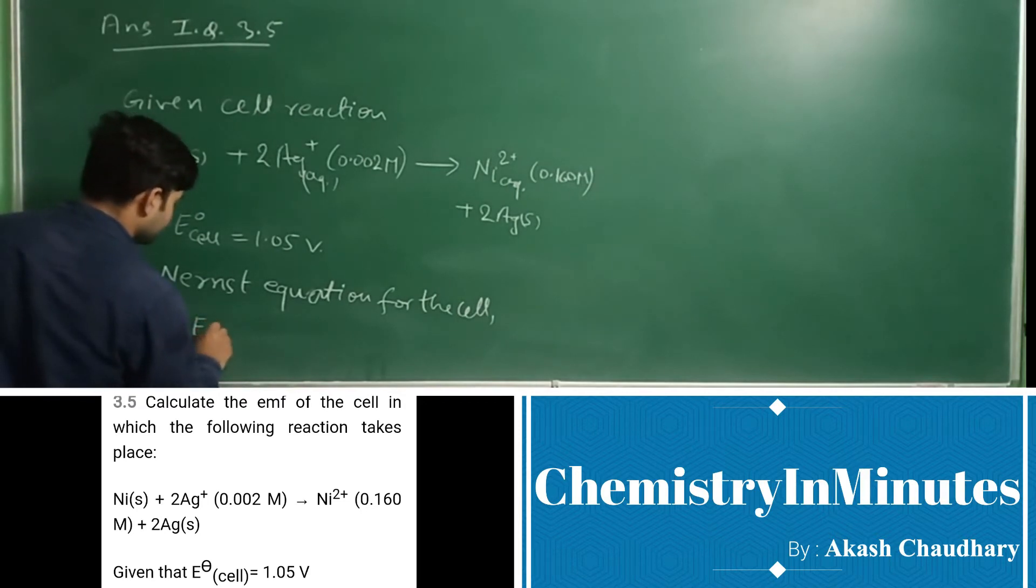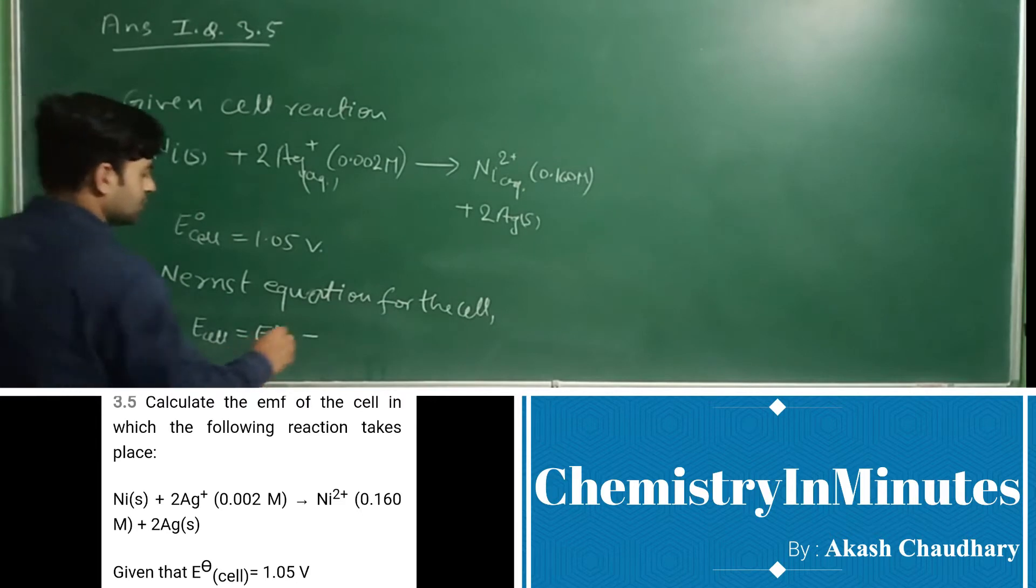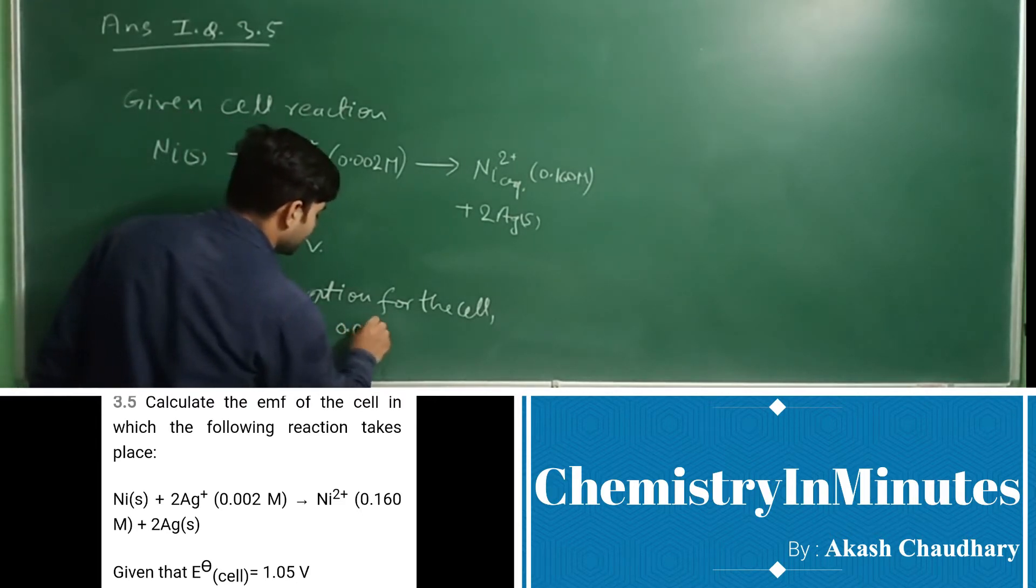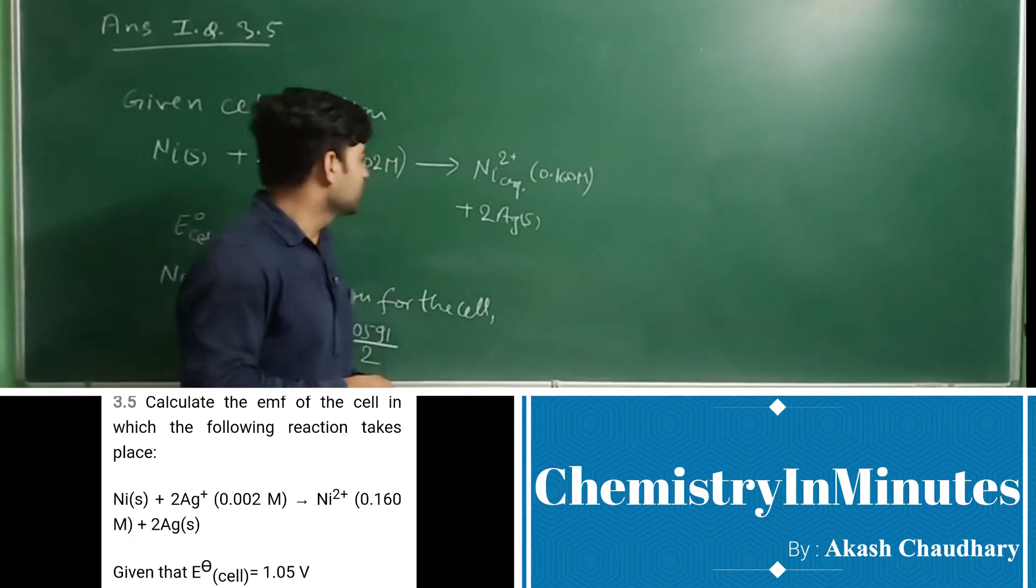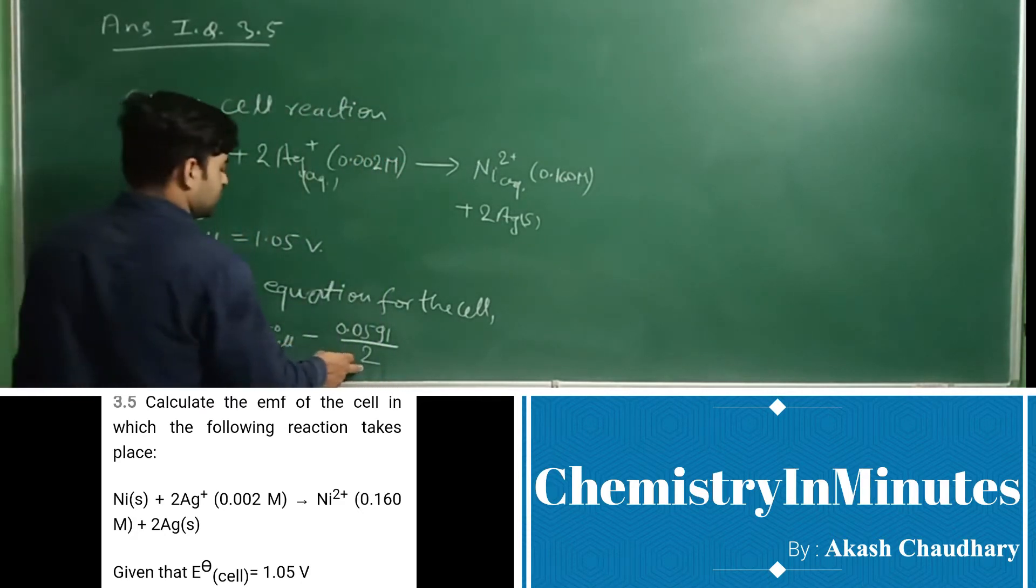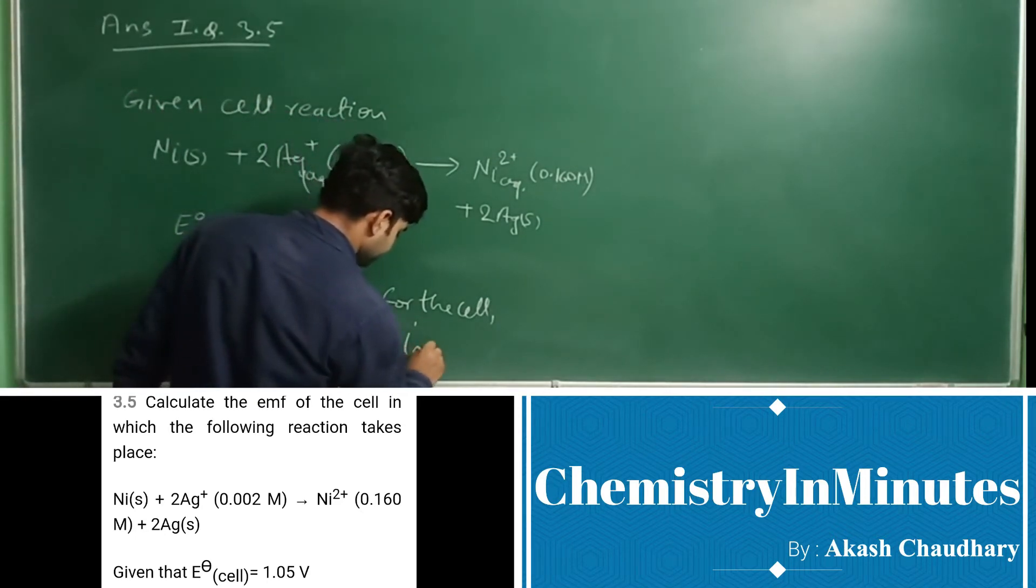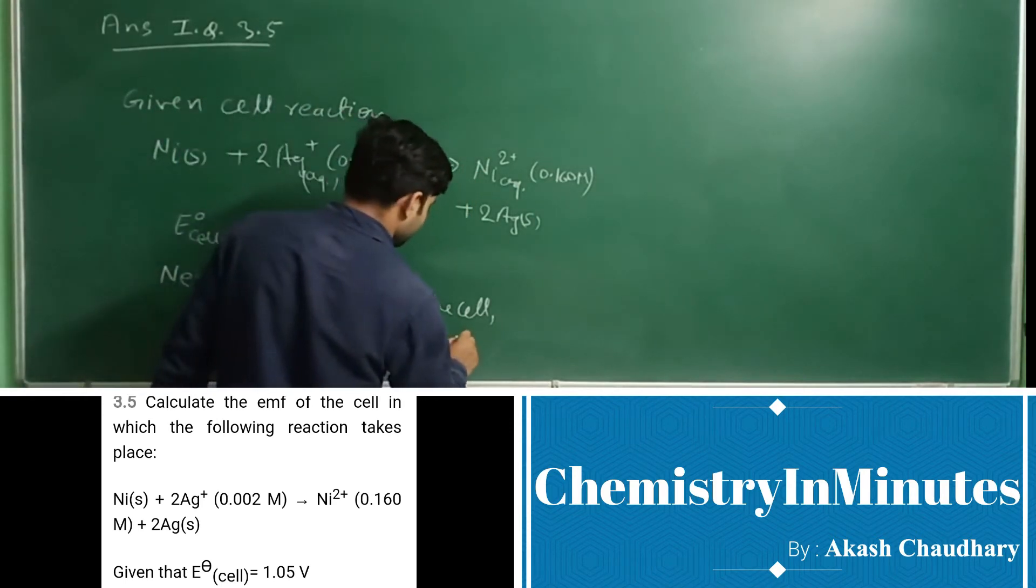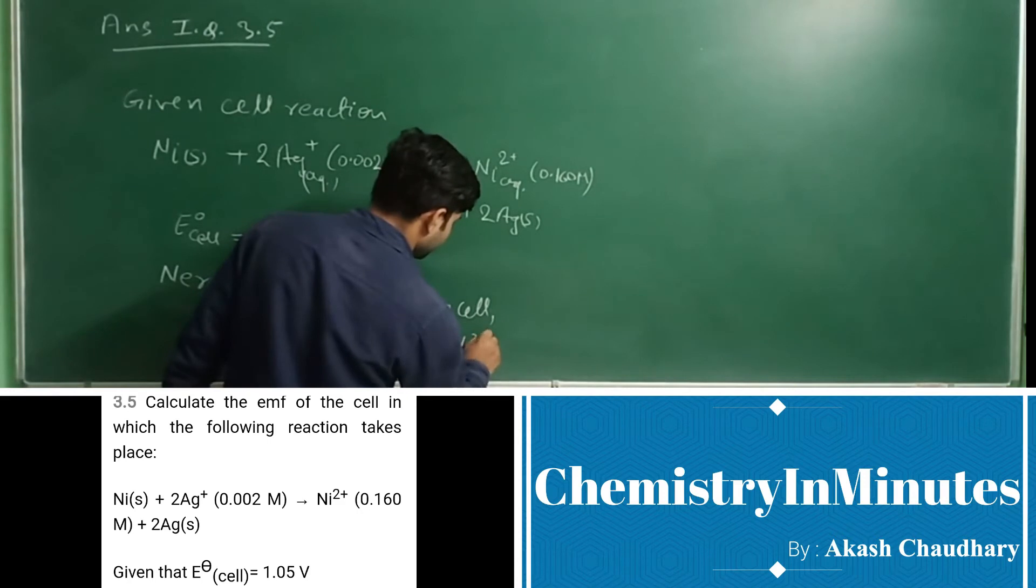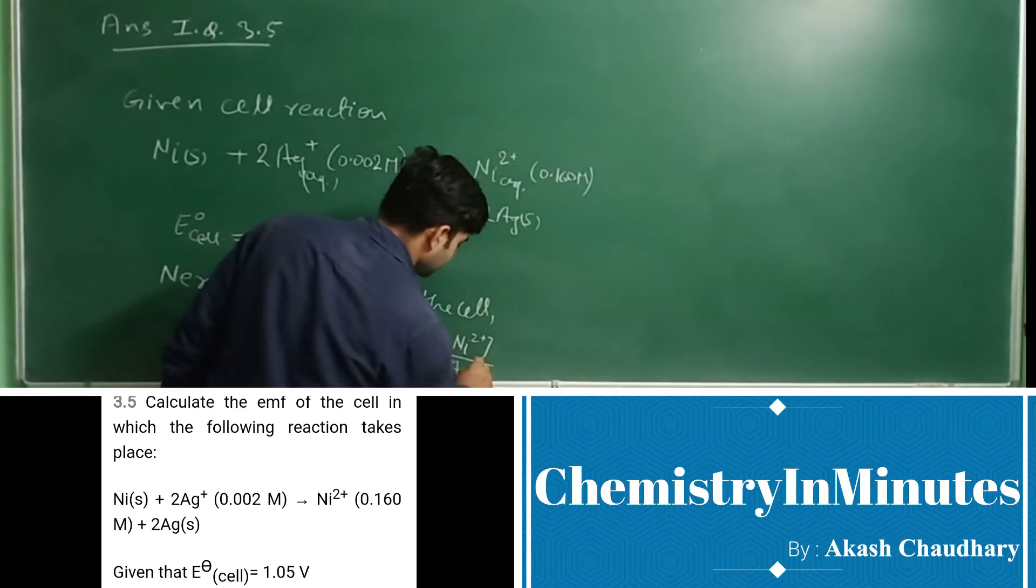Ecell = E°cell - 0.0591/n log [anode concentration/cathode concentration]. In the balanced redox reaction, the electron change is 2. Anode is nickel, concentration Ni²⁺, upon cathode ion Ag+ and square of its concentration.